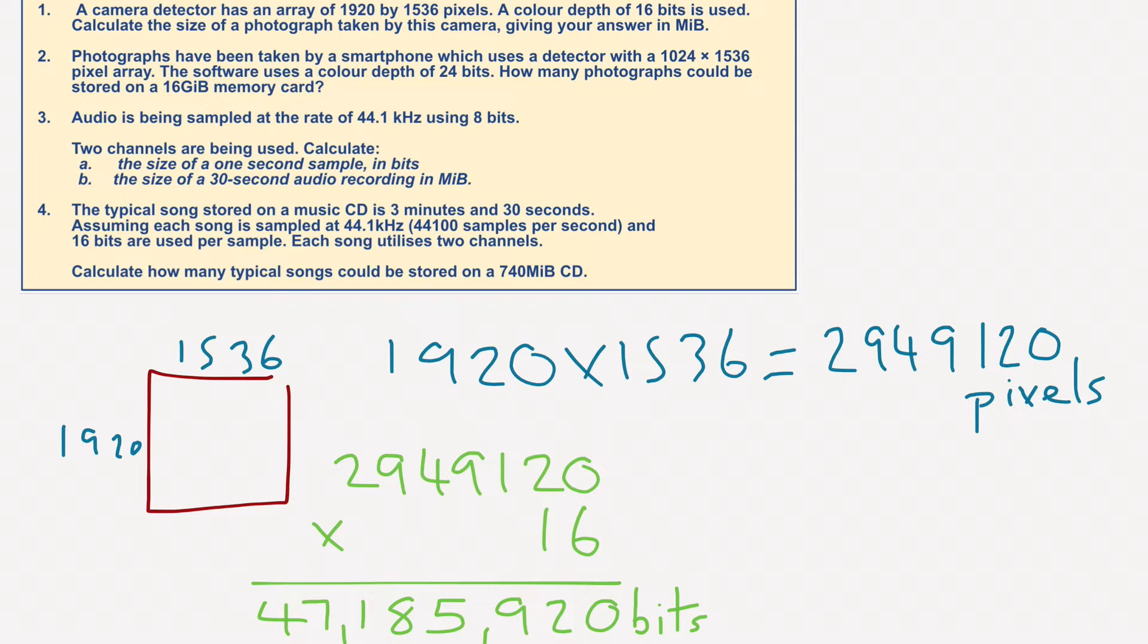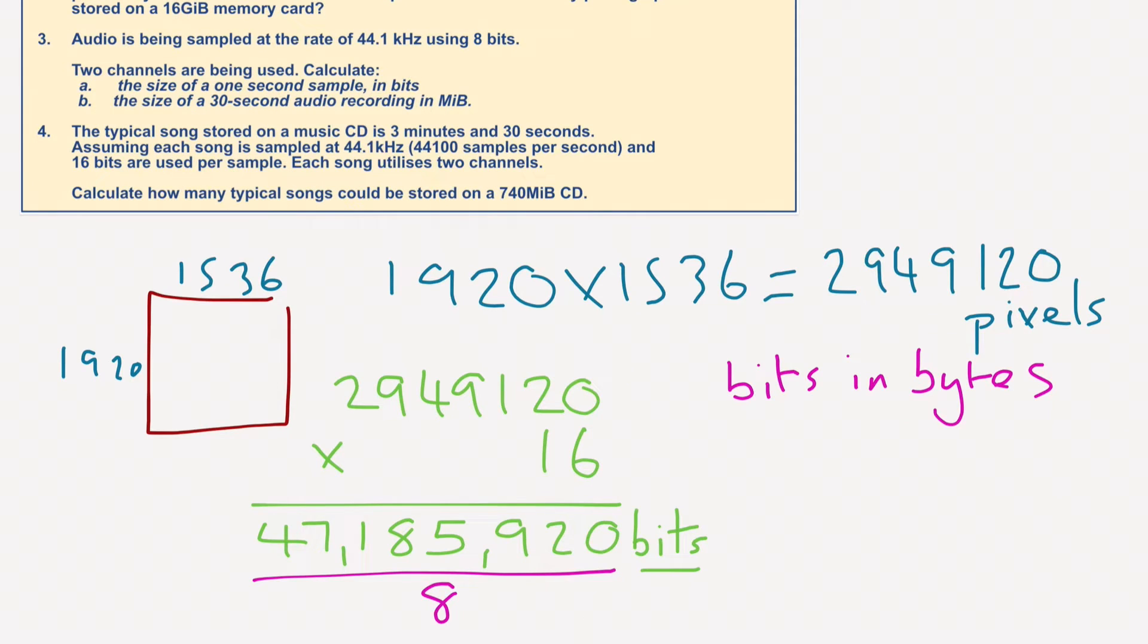And we want it in megabytes. So how do we do this? We're going to get it from bits into bytes. So we're going to divide this number by 8. If we divide that number by 8 we get 5,898,240 bytes.